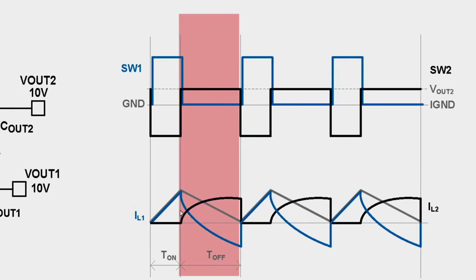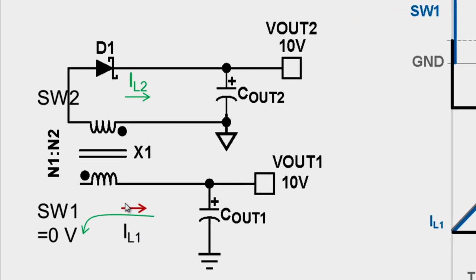In this slide, the T off subinterval is highlighted. During T off subinterval, switch node 1 is connected to ground, and the primary output voltage appears across the primary winding. Because of the polarities of the inductor winding, the diode D1 becomes forward biased, and the primary capacitor, Cout1, charges the secondary capacitor, Cout2, through the leakage impedance of the coupled inductor.